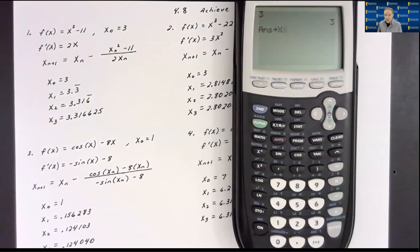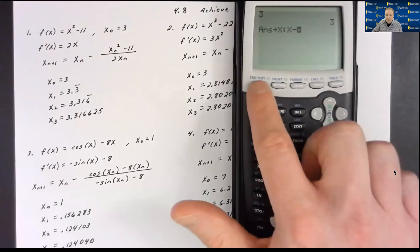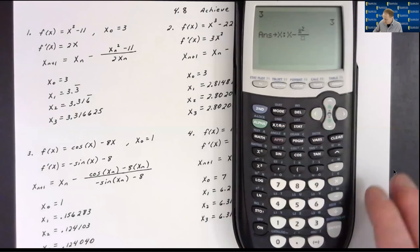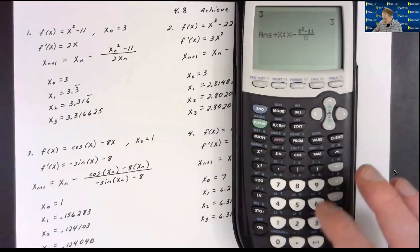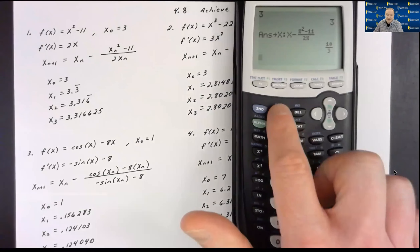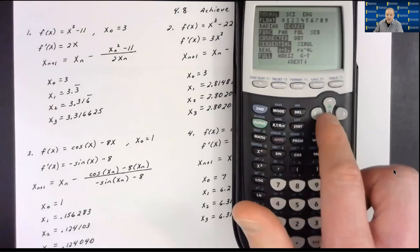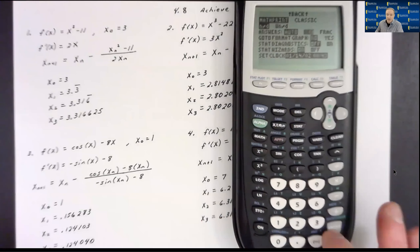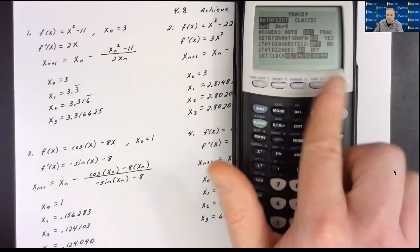Now I'll type in Newton's method. I go alpha-decimal for the colon to enable Newton's method entry. Newton's method is x minus the fraction — I'll hit alpha-y-equals for the fraction key — with x² - 11 in the numerator and 2x in the denominator, where x starts at 3 and changes for each successive guess. My calculator is in fraction mode, so I need to switch it to decimal mode since Achieve wants answers to six decimal places.